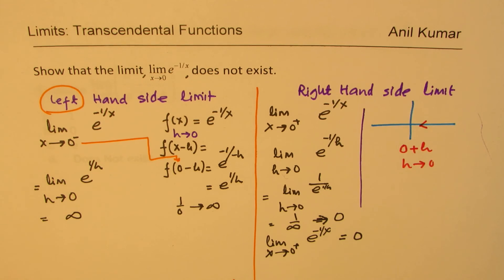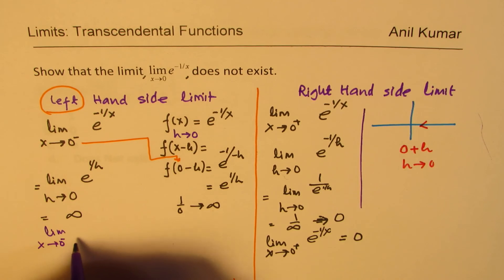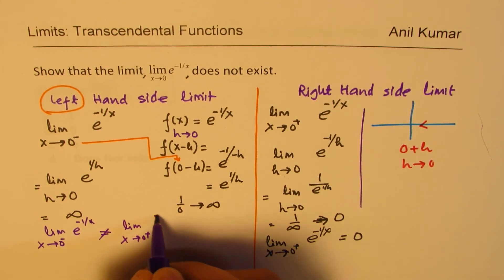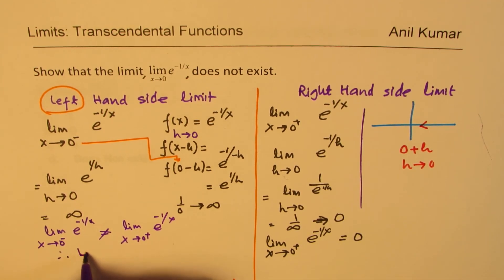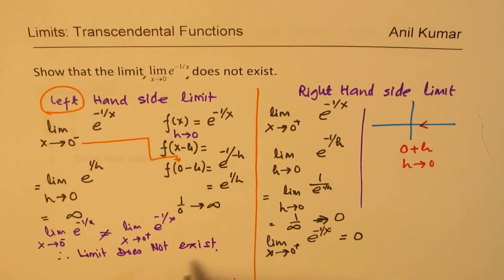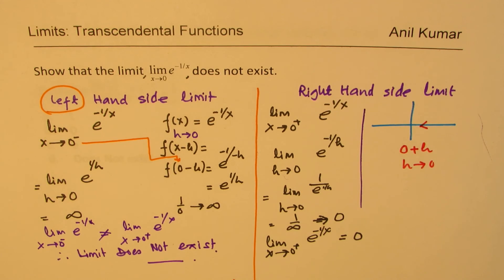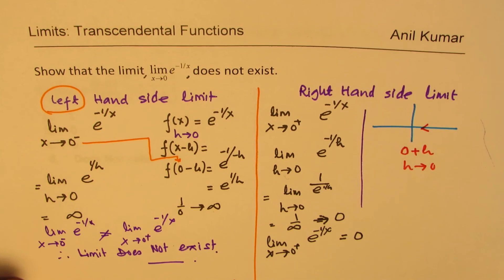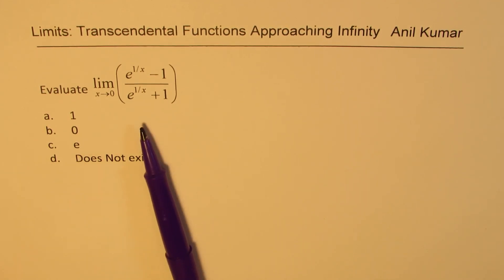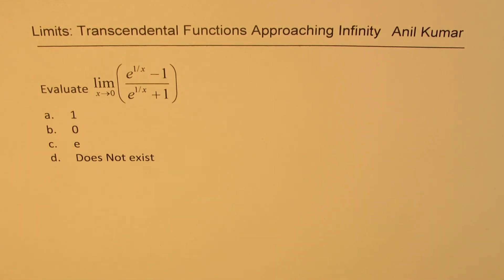From both these results, we conclude that the limit as x approaches 0 from the left of e to the power of minus 1 over x is not equal to the limit as x approaches 0 from the right. Therefore, the limit does not exist. That is how you could show it — I hope the concept is absolutely clear. Based on this concept, there is a multiple choice question for you — pause the video, answer it, and look into my suggestions. Feel free to write your comments, share your views, and if you like and subscribe, that'd be great. Thanks and all the best.